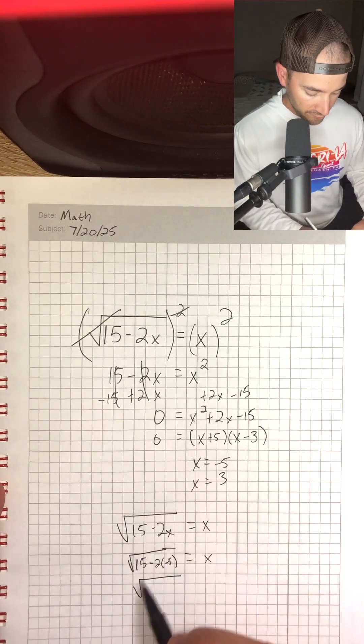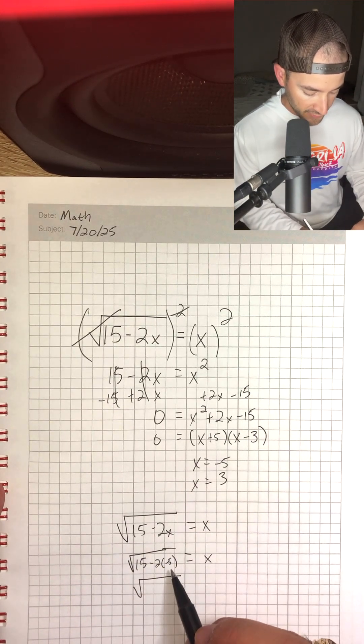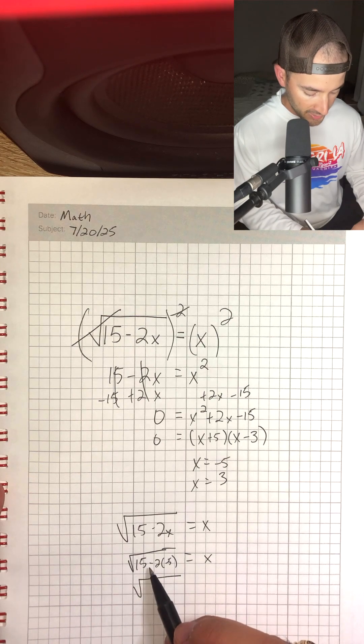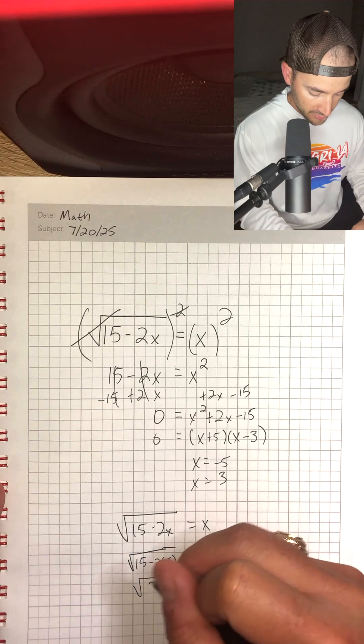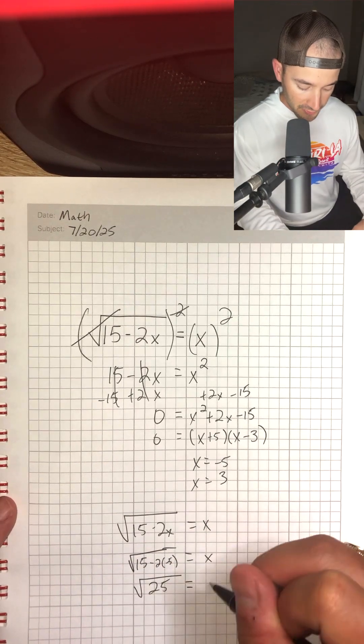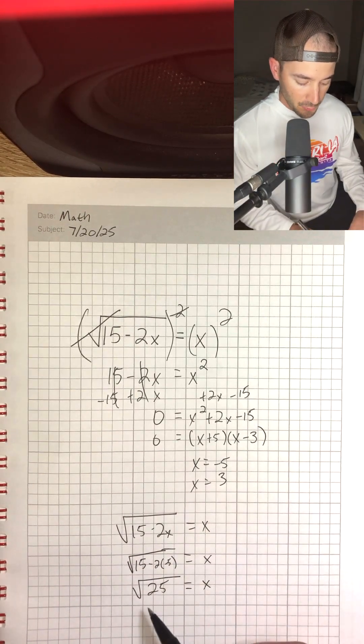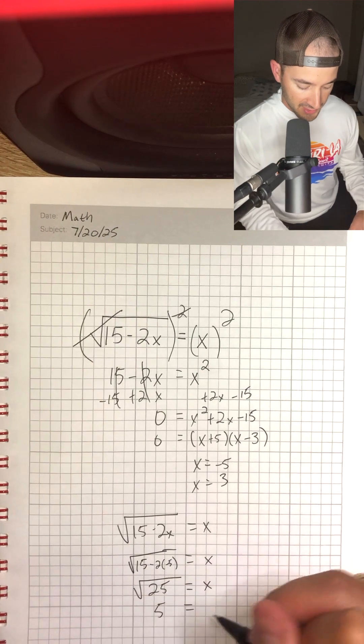That would be square root of 15 minus negative 10 or 15 plus 10, which would be 25 is equal to x. And so the square root of 25 would be 5 is equal to x.